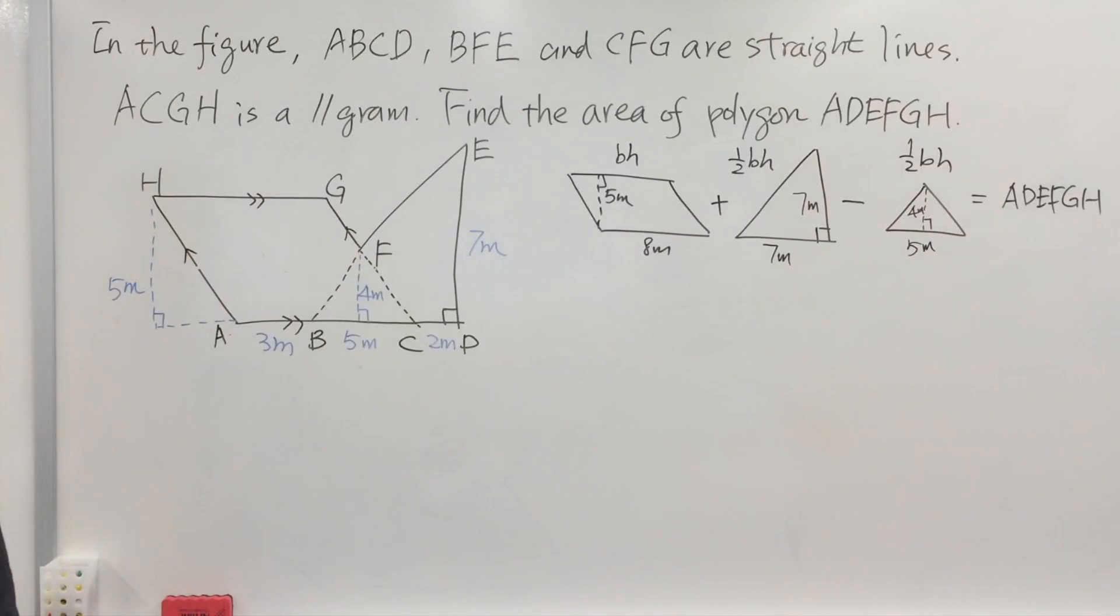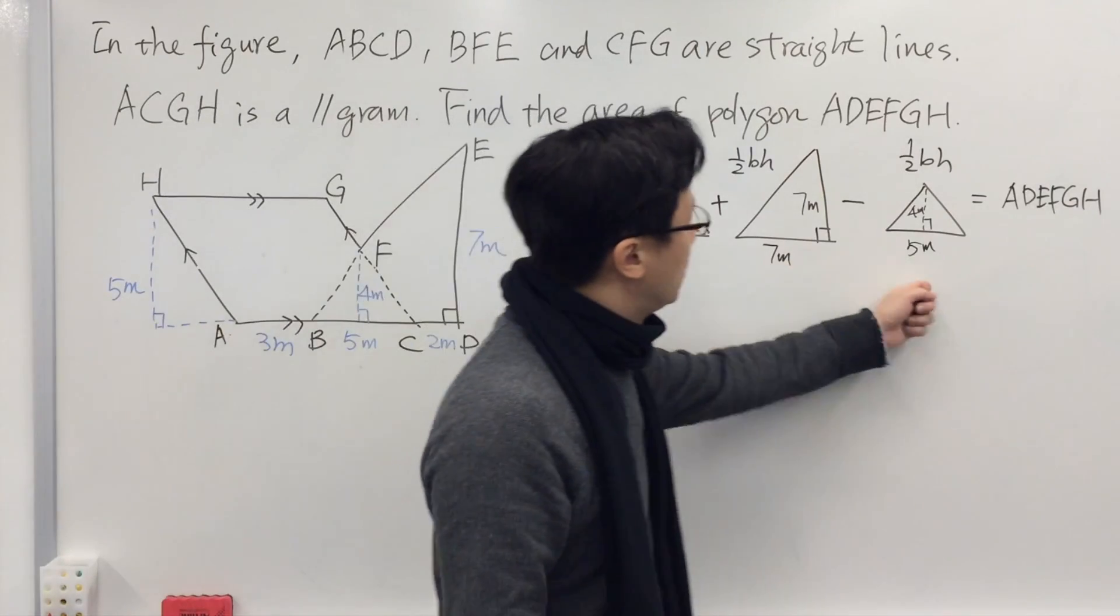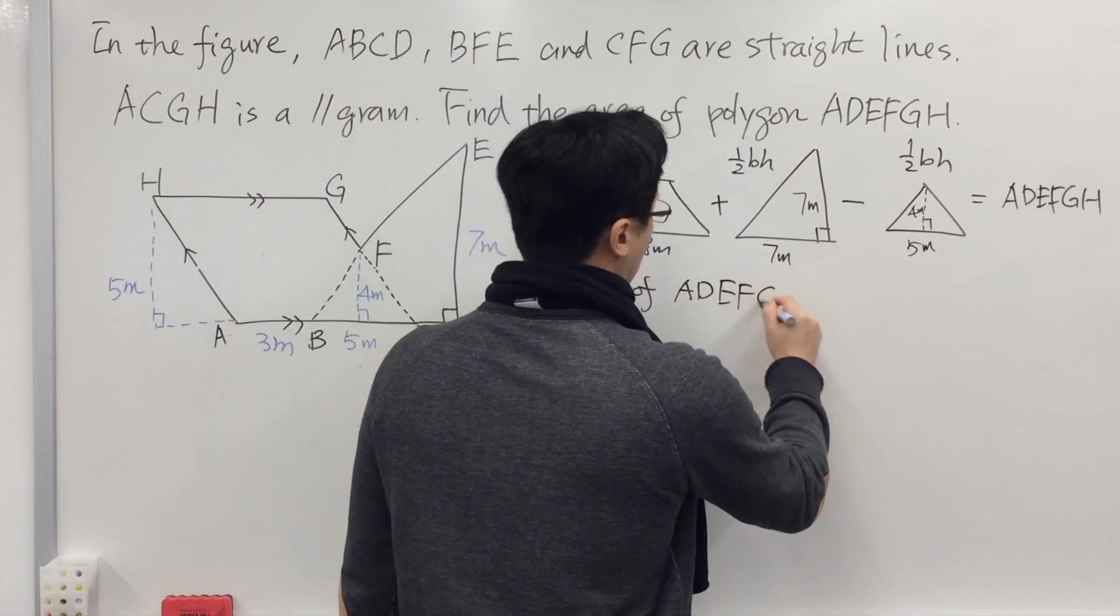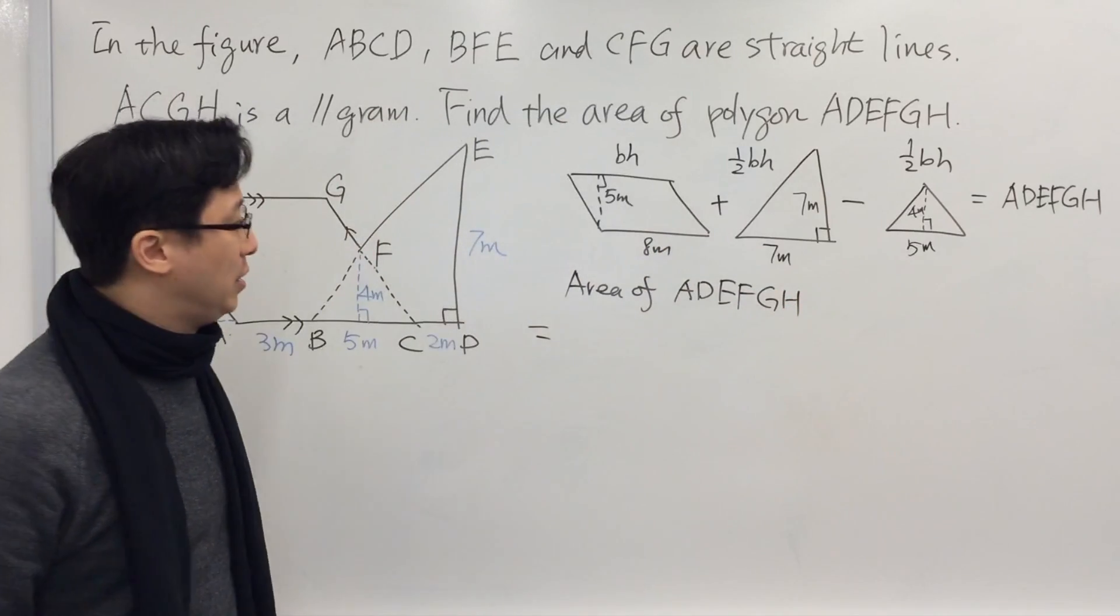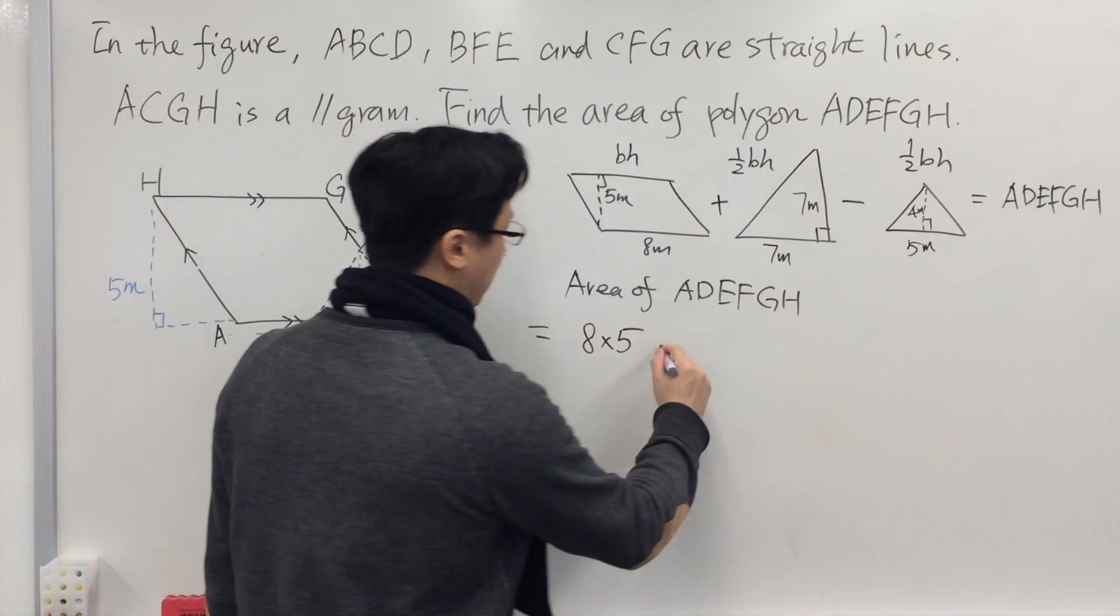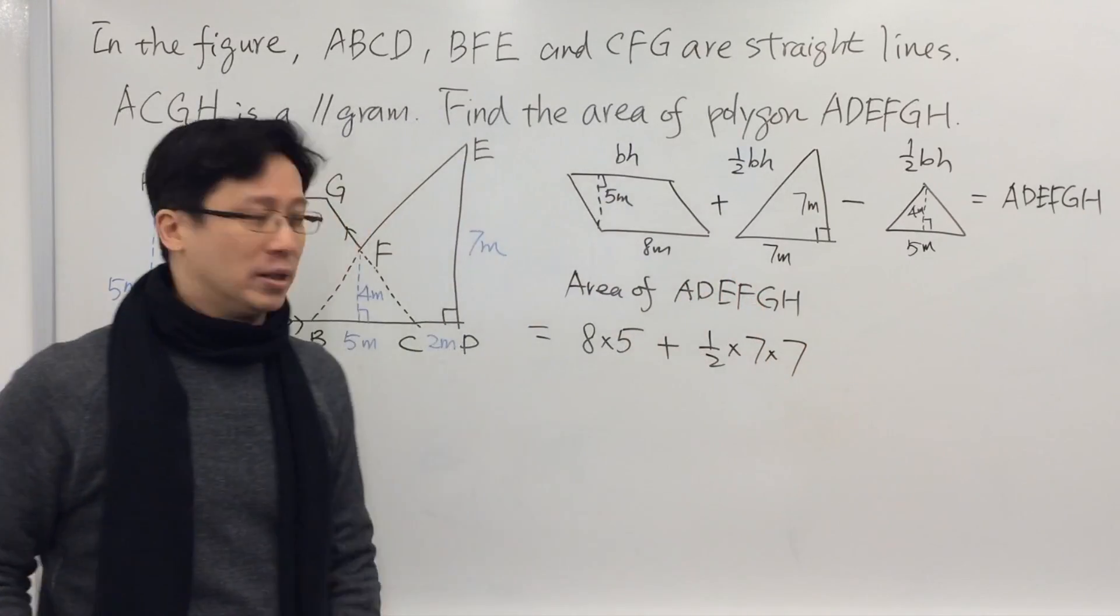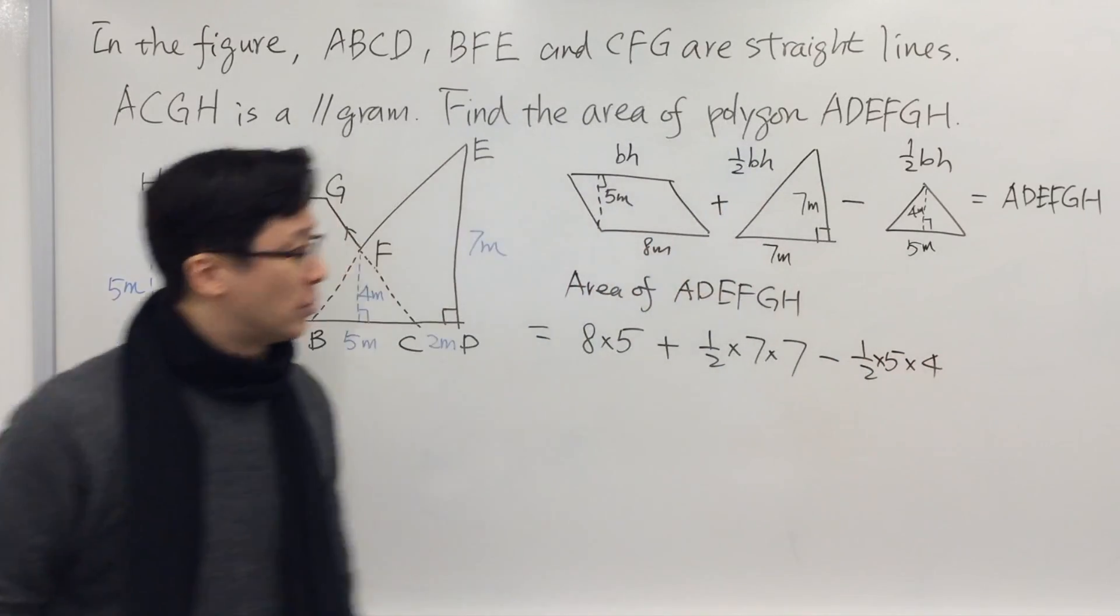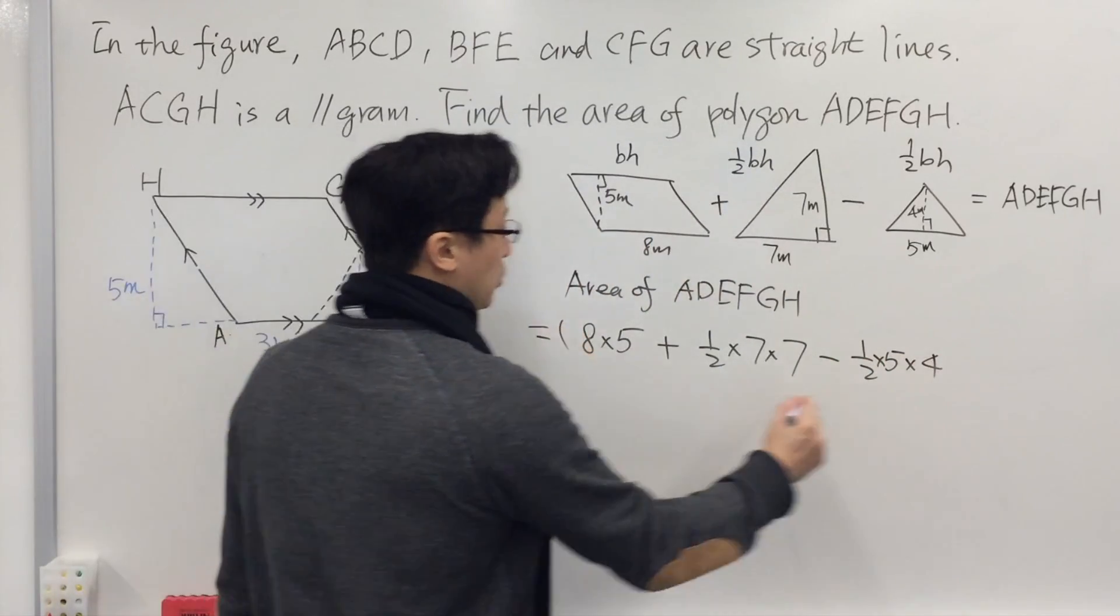Now we can proceed to find the area of ADEFGH. Area equals the area of the parallelogram plus the big triangle minus the smaller triangle. The unit will be square meters.